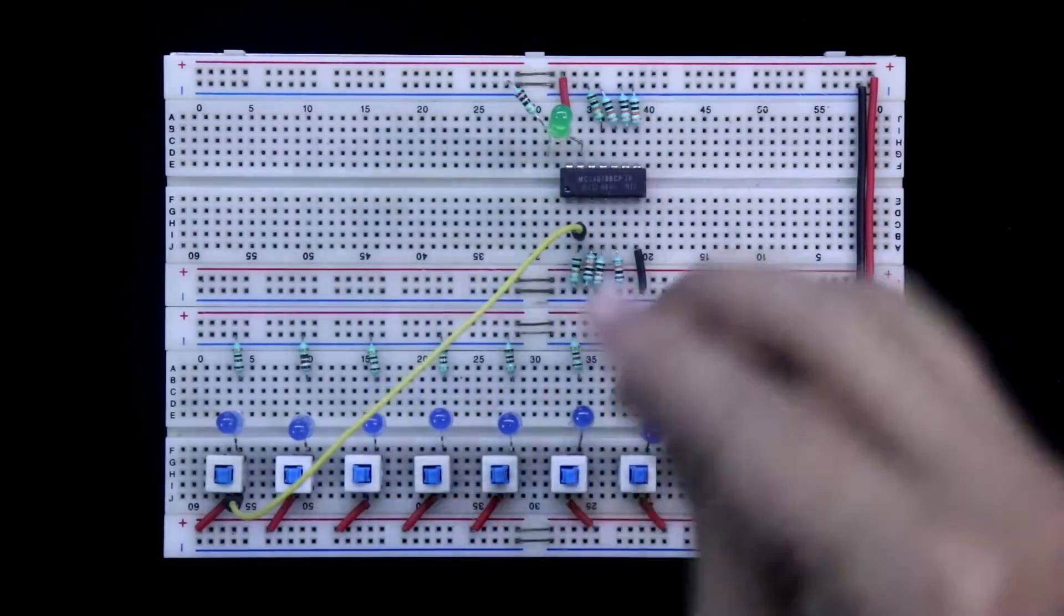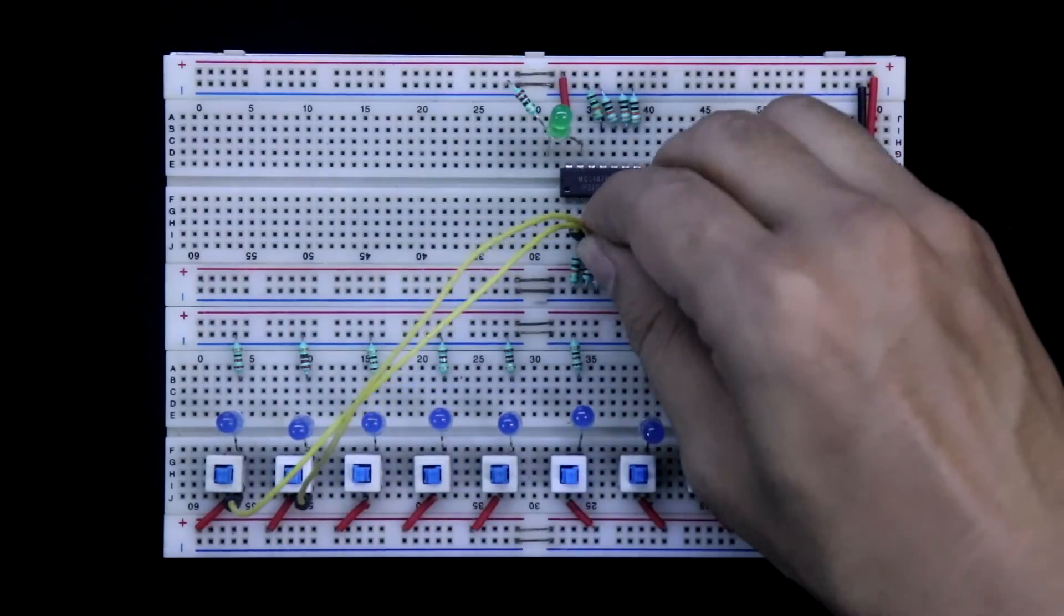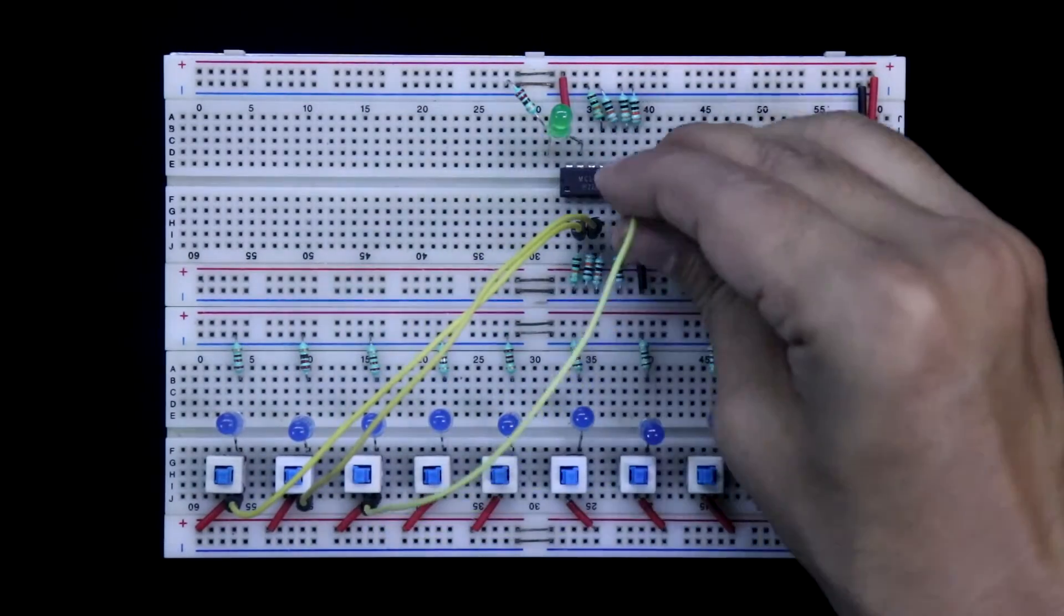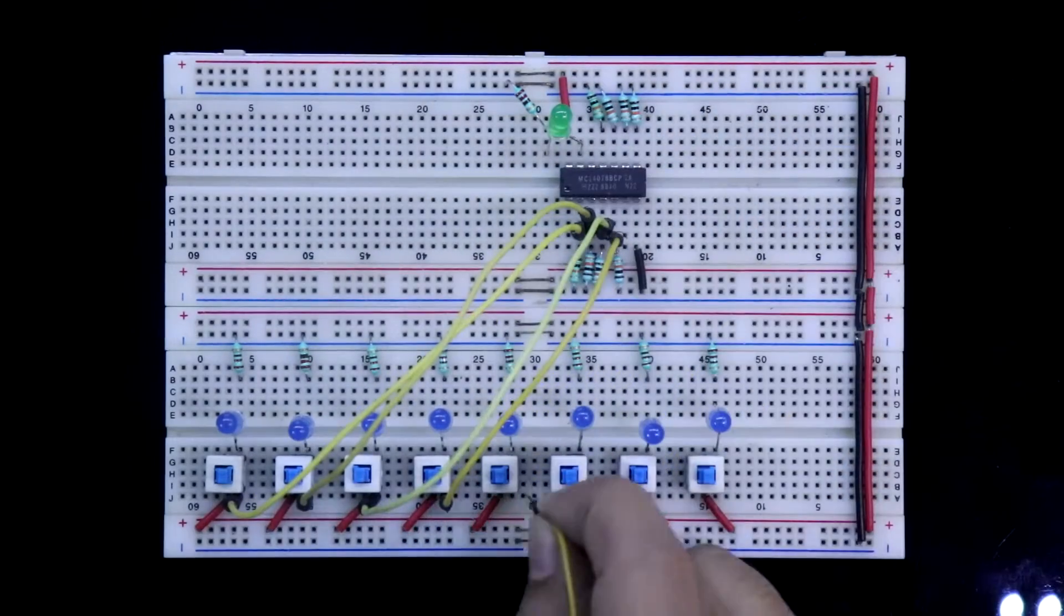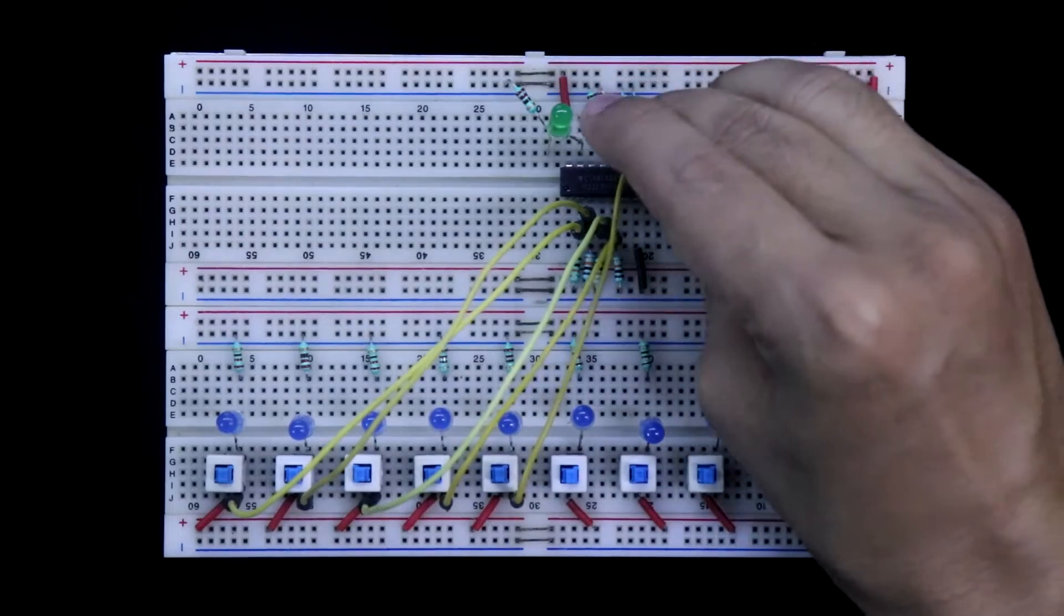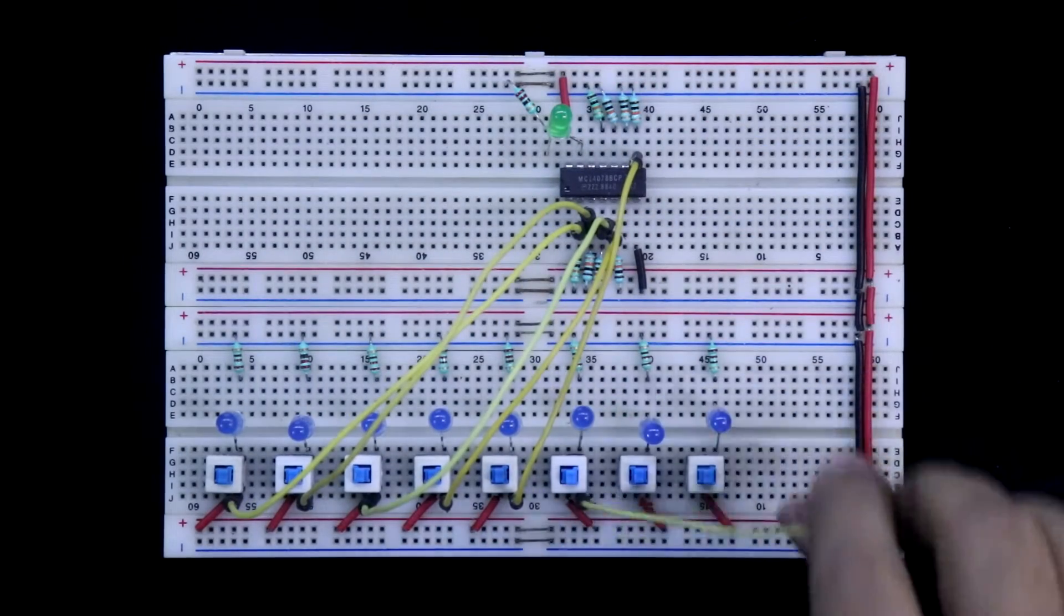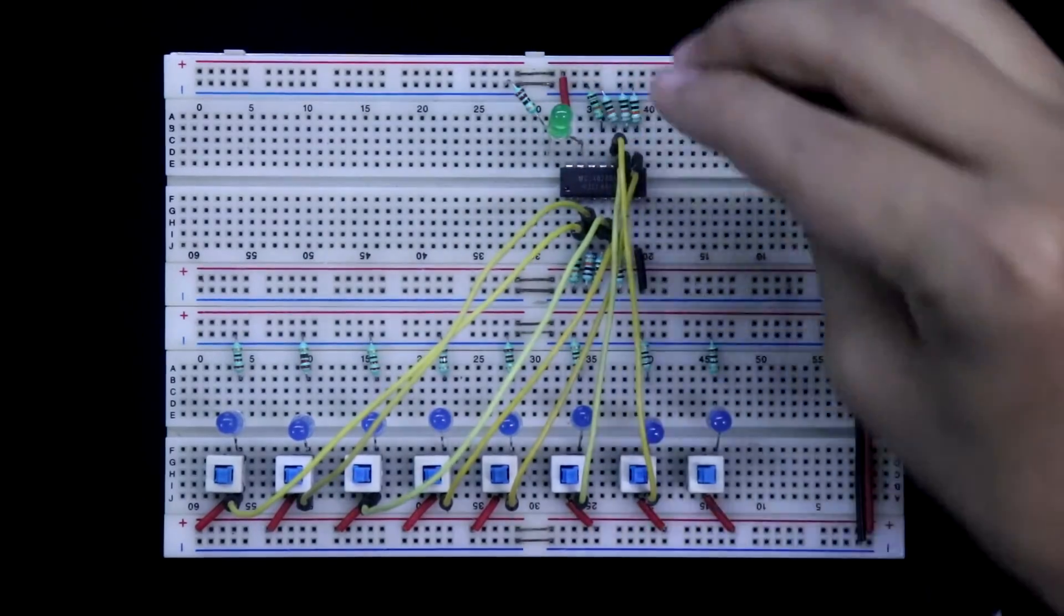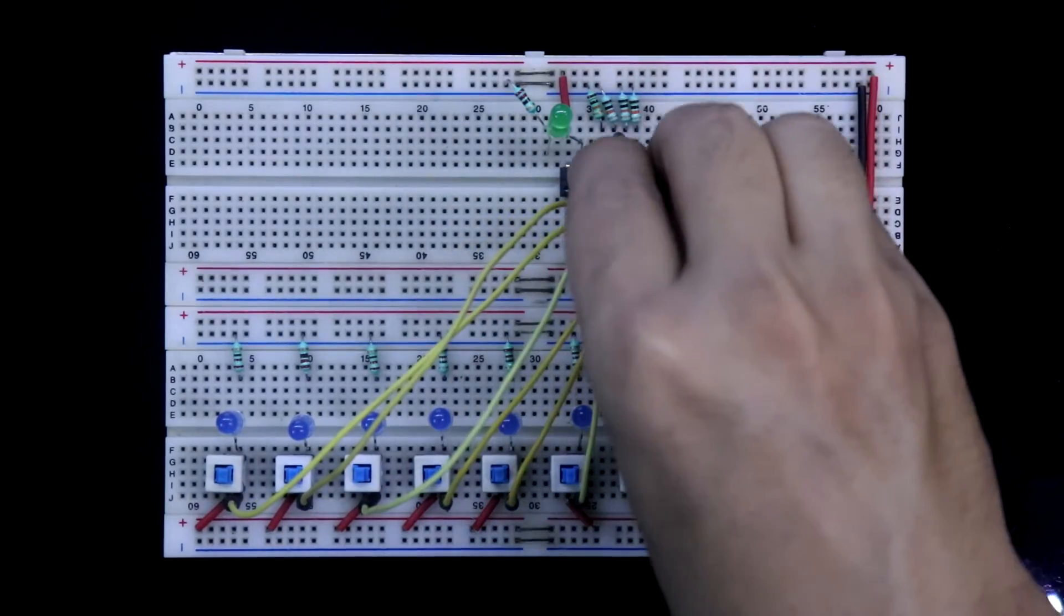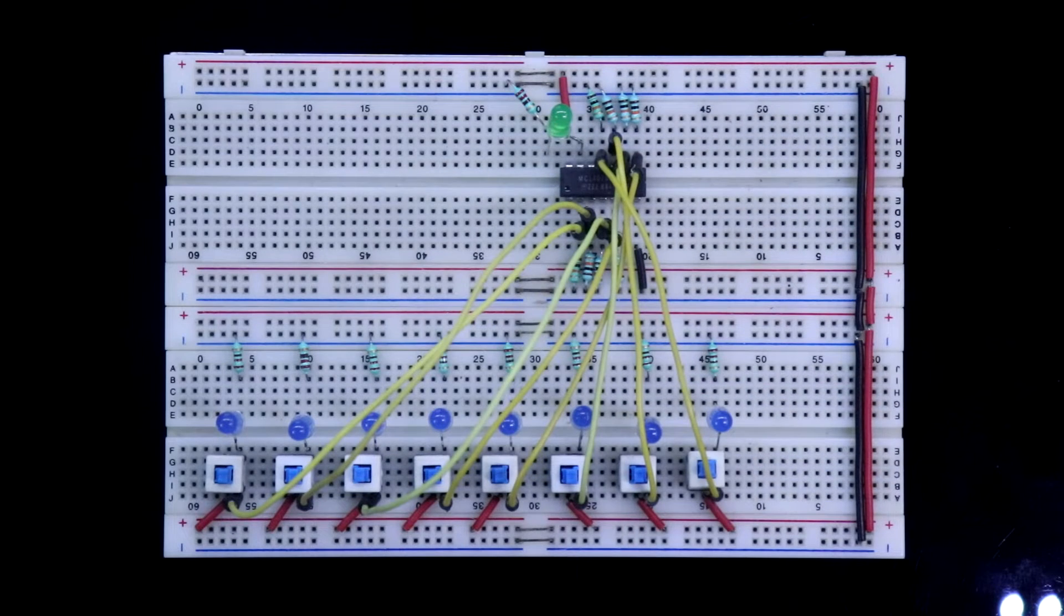Switch A to pin 2, switch B to pin 3, switch C to pin 4, switch D to pin 5, switch E to pin 9, switch F to pin 10, switch G to pin 11, and switch H to pin 12. So this is how inputs and output are connected.